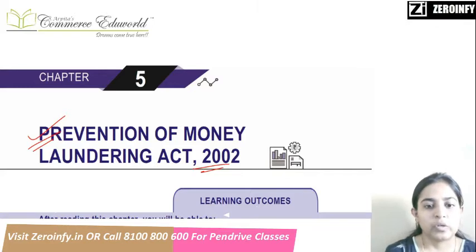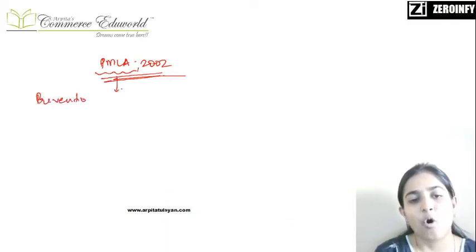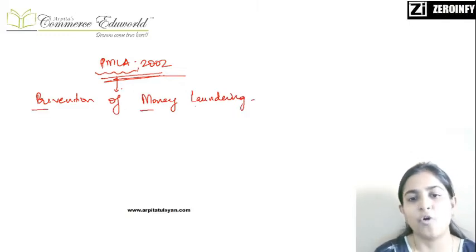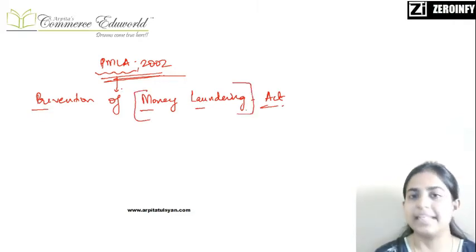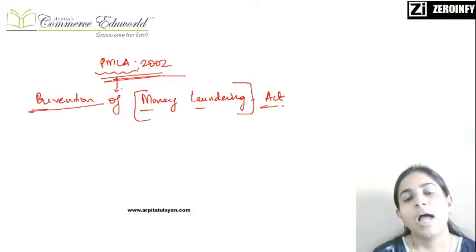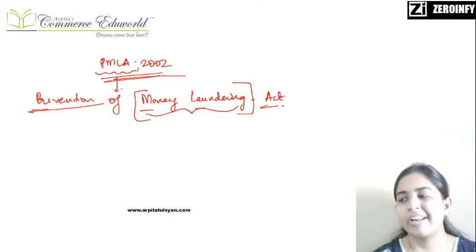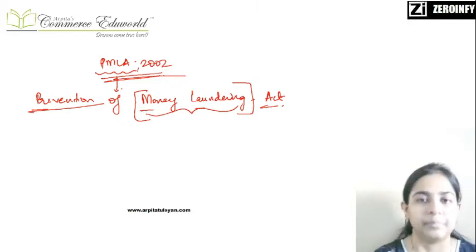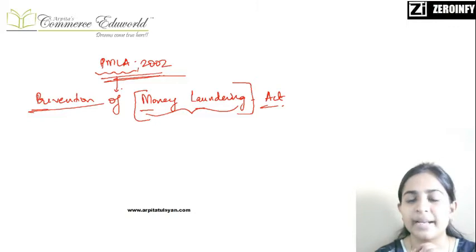First of all, what do you mean by the term PMLA? PMLA stands for Prevention of Money Laundering Act 2002. Now we have two things in the name: the first term is money laundering and the second is prevention of money laundering. In plain language, money laundering means where we are trying to show or convert our illegally earned money into legal money, or we are trying to portray as if the money has been earned from legal sources, when actually it has been earned from illegal sources.